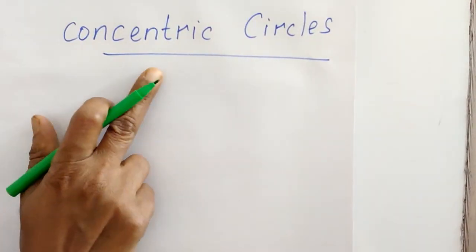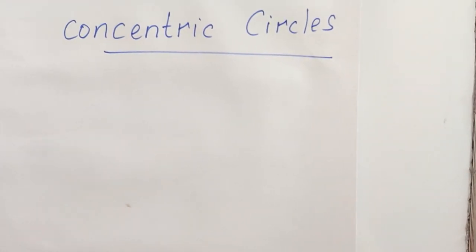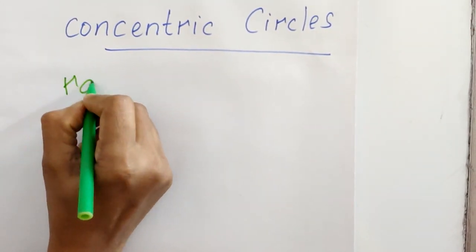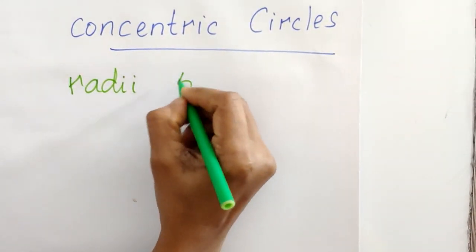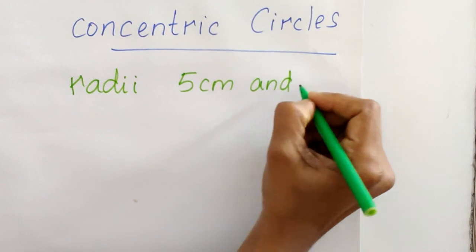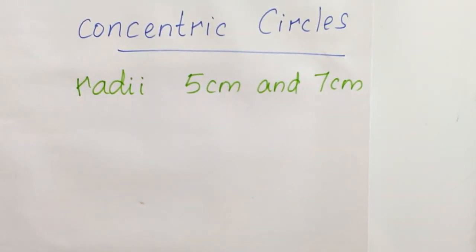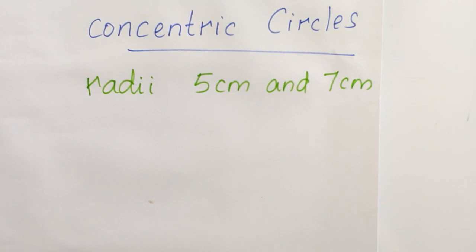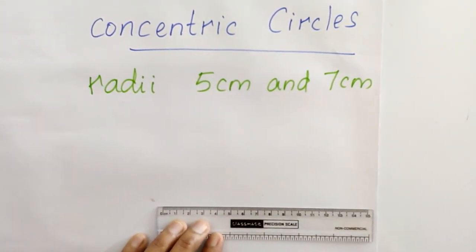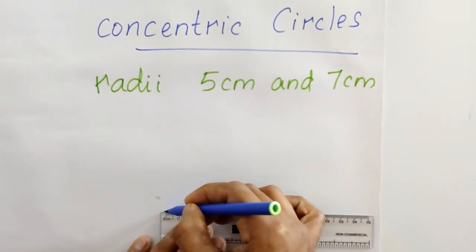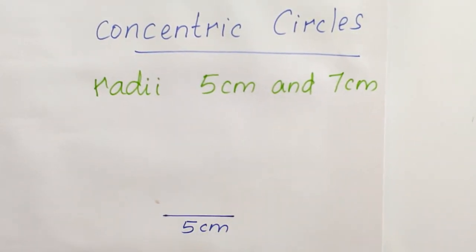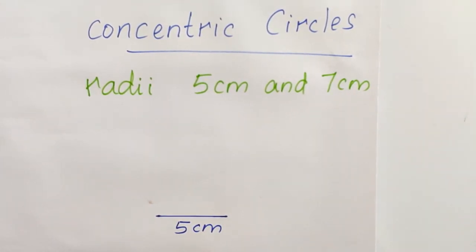Next, we are discussing about concentric circles. Concentric circles are circles having a common center. Here we are going to draw two concentric circles. We draw the first circle with a radius of 5 cm — start from 0 till 5. Place the metal tip on one end and the pencil tip on the other end.